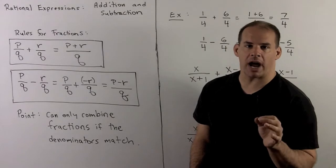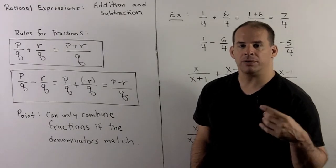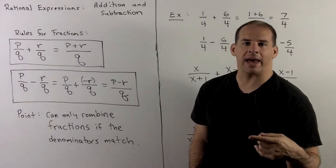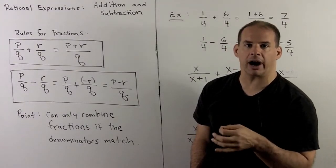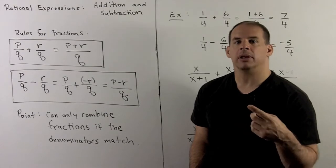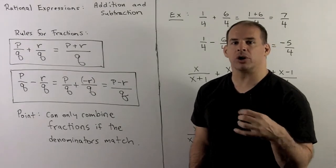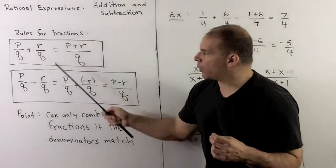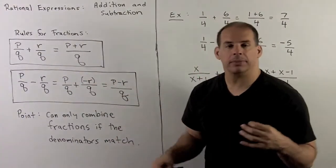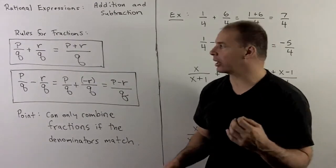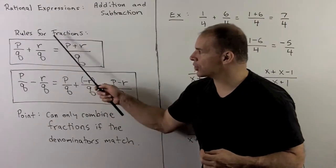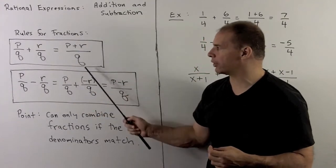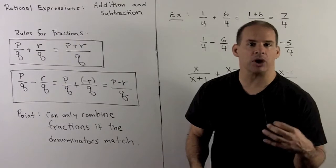We continue with the main operations for rational expressions. We've seen how to multiply and divide rational expressions; now we want to add and subtract, which requires a little bit more care. The issues for addition and subtraction are the same as for rational numbers. If I want to add two fractions, I can only combine if they have a like denominator. So if I have P over Q plus R over Q, the Q's match, and I can rewrite this as P plus R over Q.